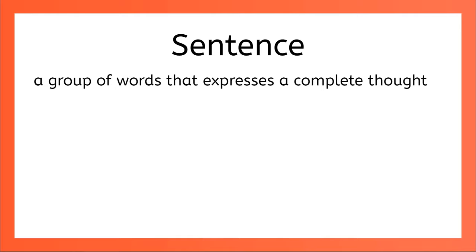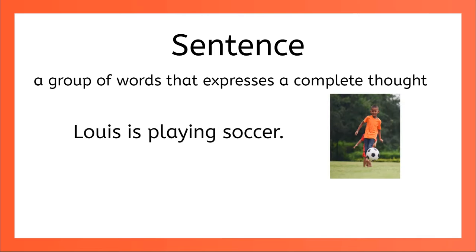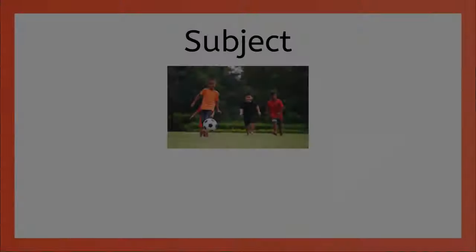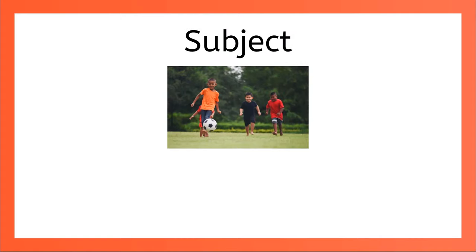You already know that a sentence is a group of words that expresses a complete thought, like, Lewis is playing soccer. A sentence has a subject that tells who or what the sentence is about and a predicate that gives us more information about the subject. The predicate always contains a verb. But sometimes the subject isn't quite that simple.